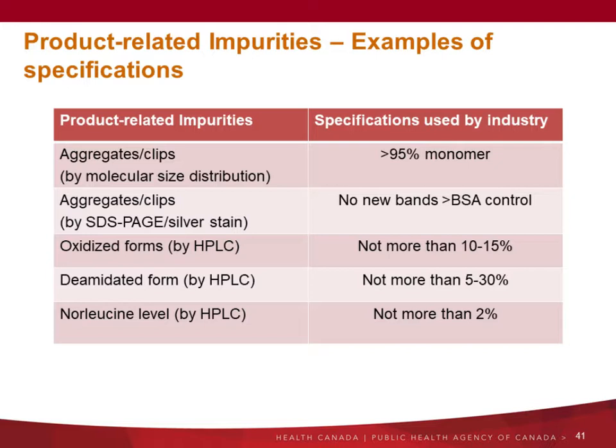Here are some examples of specifications commonly seen for product-related impurities. For aggregates by size exclusion HPLC, we see the monomer should be higher than 95%, or aggregates and fragments less than 5%. By SDS-PAGE, no new band higher than the BSA control. Oxidized form by reverse phase — no more than 10-15%. But all those are product-specific. You really need to characterize your product, isolate those variants, determine the activity, and based on that, set your specifications.